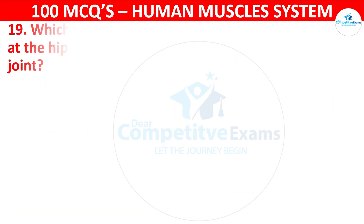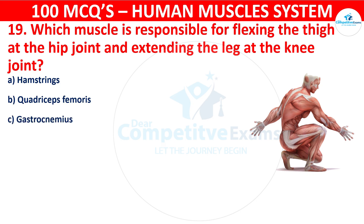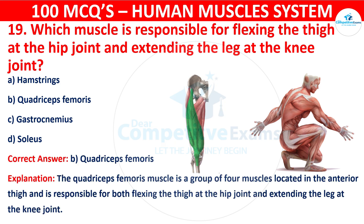Question number nineteen: Which muscle is responsible for flexing the thigh at the hip joint and extending the leg at the knee joint? Your options are: Hamstrings, Quadriceps femoris, Gastrocnemius, or Soleus. The correct answer is B, that is quadriceps femoris. The quadriceps femoris is a group of four muscles located in the anterior thigh, responsible for both flexing the thigh at the hip joint and extending the leg at the knee joint.